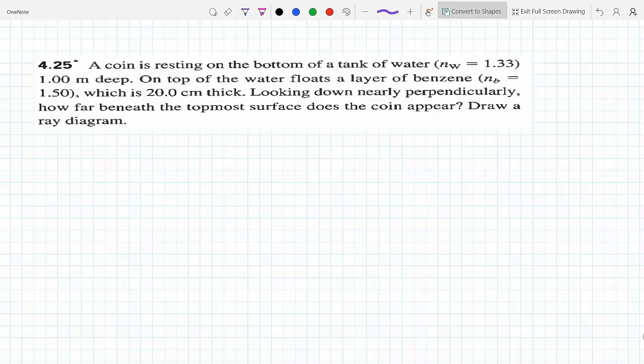Here's an interesting problem where we have a coin resting on the bottom of a tank of water one meter deep. On top of the water floats a layer of benzene with a different index of refraction.